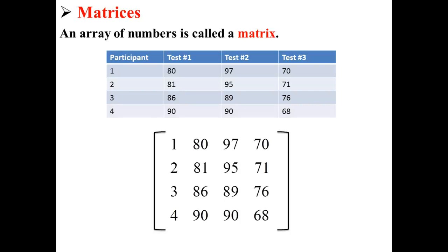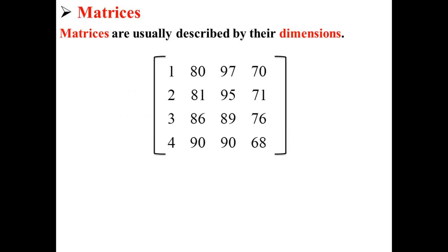Matrices are usually described by their dimensions. Matrices have rows and columns. So for our matrix, we have four rows and four columns, which makes it a four by four matrix.